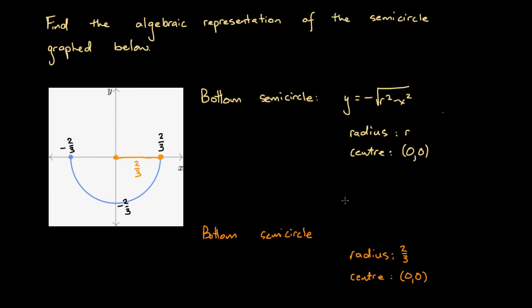So we can write y equals negative, this is very important, this determines that it's a bottom semicircle, so negative square root of 2 over 3 squared minus x squared.